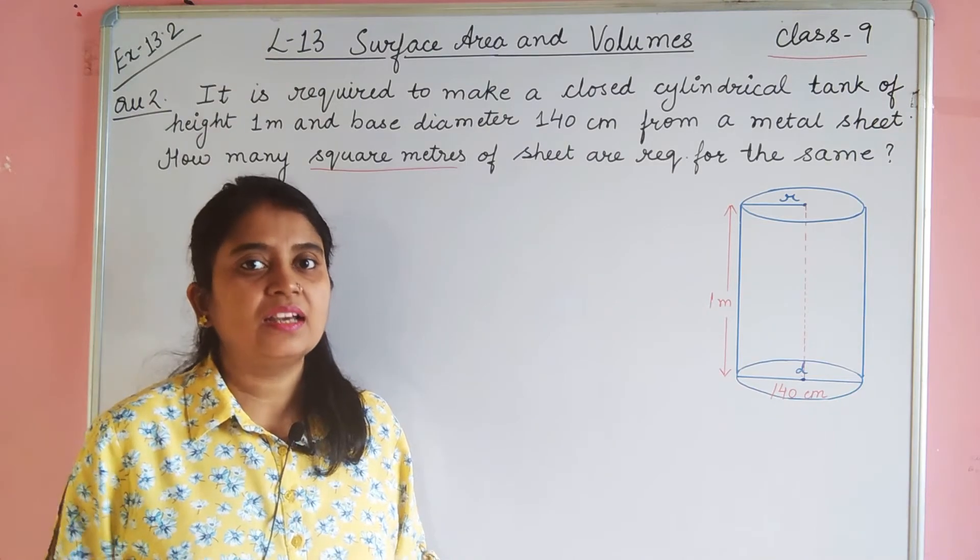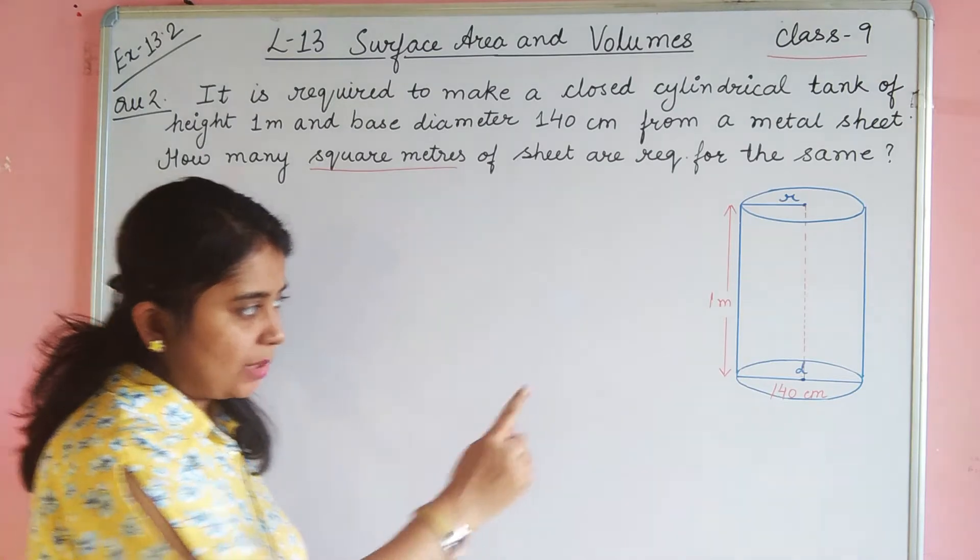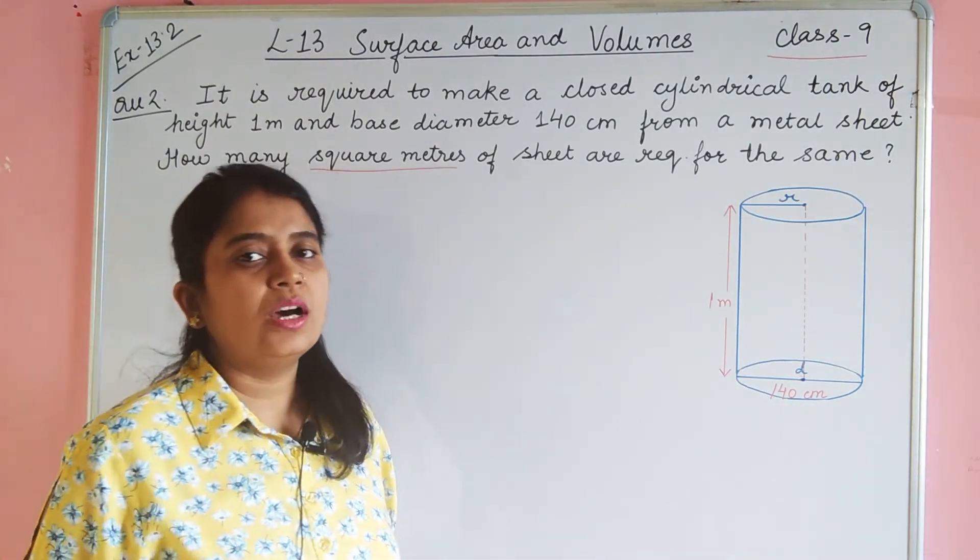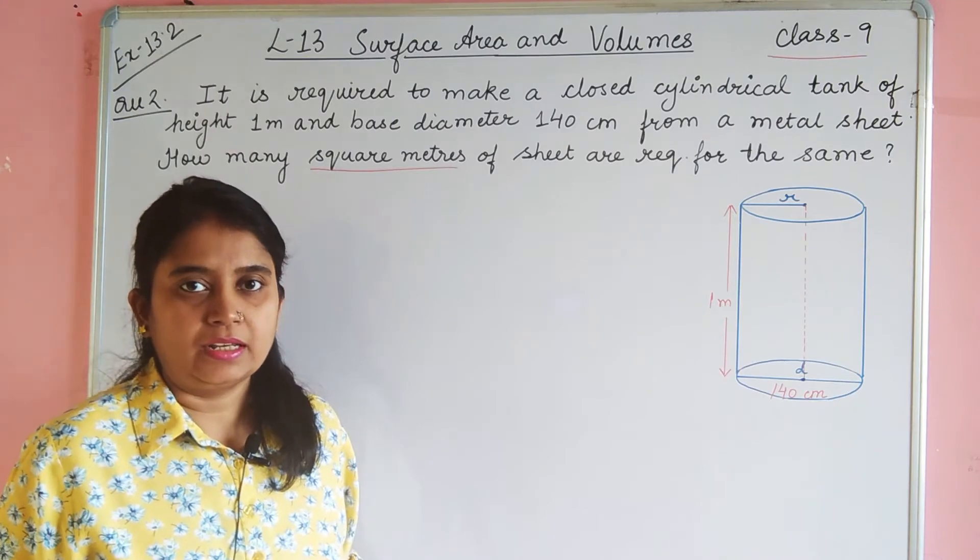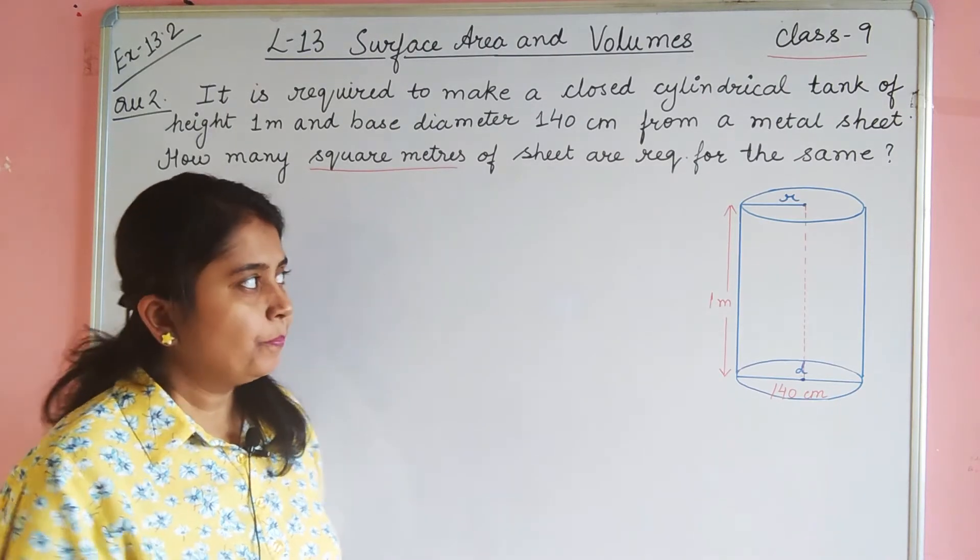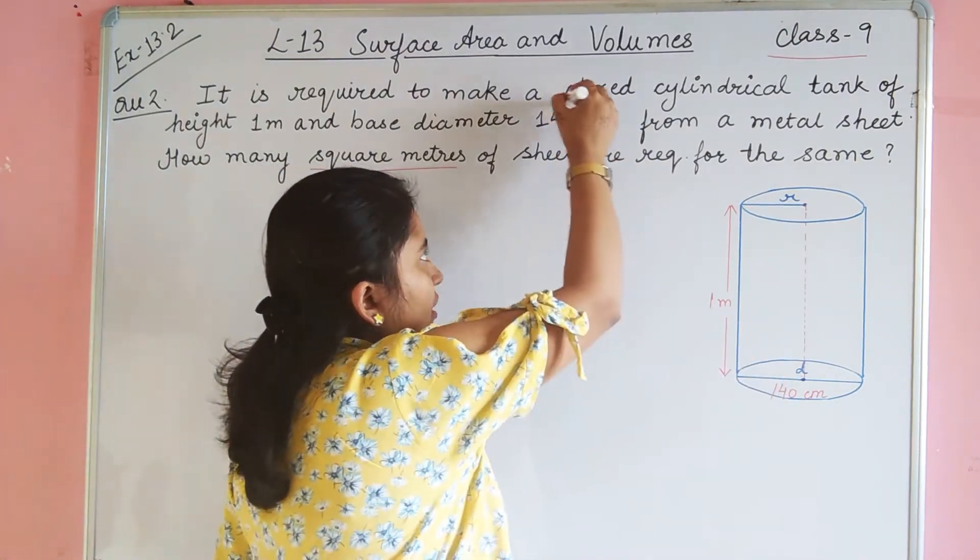It means that the area should be in meter square. The second thing is that we have to make a formula of total surface area because we have to make a closed cylinder.